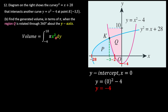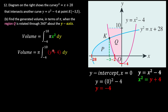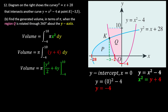Region Q is bounded by the red color curve, so we make x² the subject from y = x² - 4, giving x² = y + 4. Substituting back, we integrate π(y + 4) dy. Power increases by 1 divided by new power, with the appropriate boundary limits.